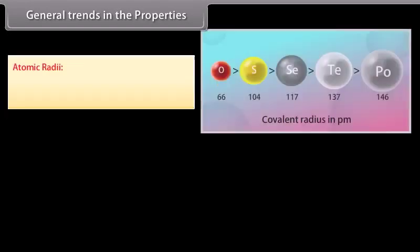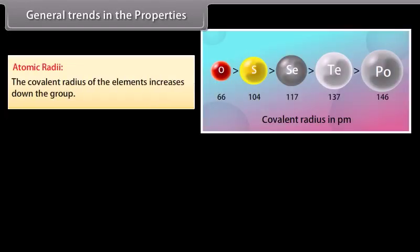General trends in the properties. Atomic radii: The covalent radius of the elements increases down the group. It is due to the increased nuclear charge which results in greater attraction of the electrons by the nucleus.